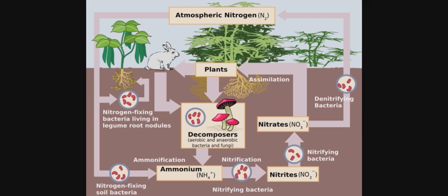Plants and animals can use nitrogen only in the form of ammonia, ammonium compounds, or nitrates. The process involved in the nitrogen cycle include nitrogen fixation — the conversion of atmospheric nitrogen into reactive compounds available to living organisms — done by bacteria and blue-green algae. The nitrogen-fixing bacteria Rhizobium occurs in the root nodules of plants, fixing nitrogen compounds there.